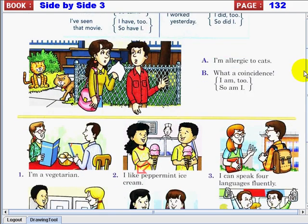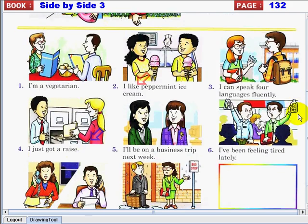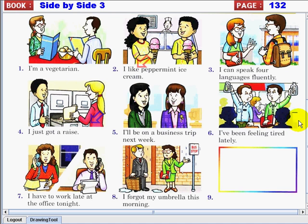Number five, I'll be on a business trip next week. What's the response? Okay, so will I, or I will too.